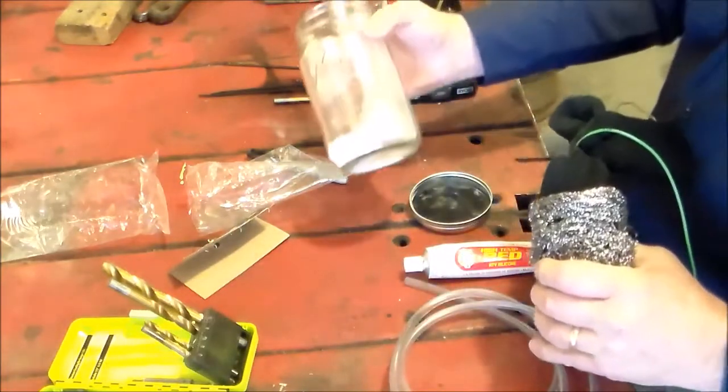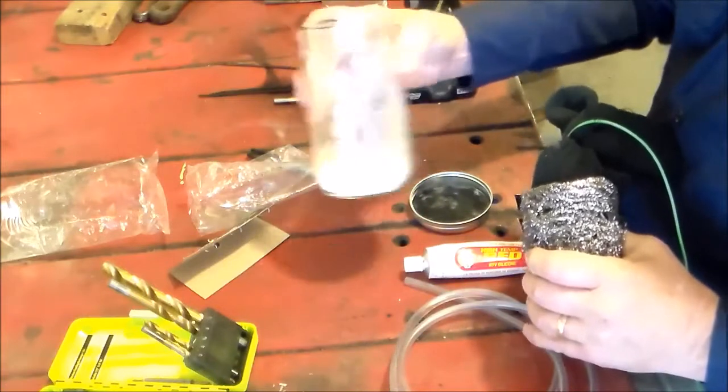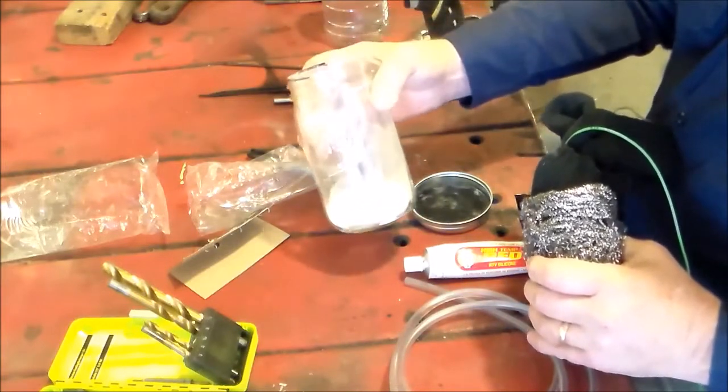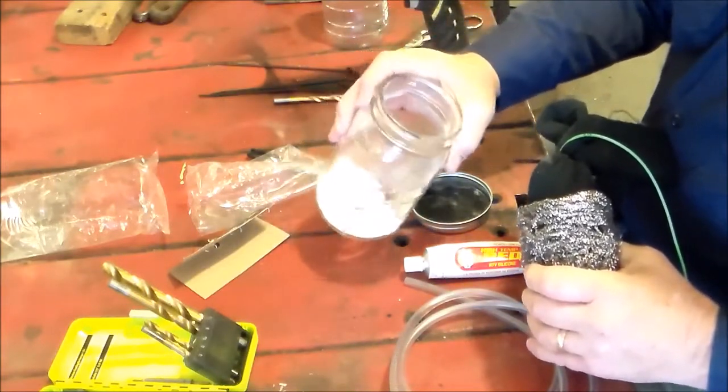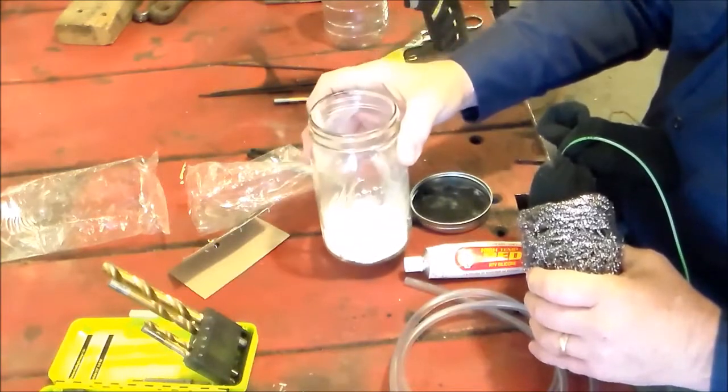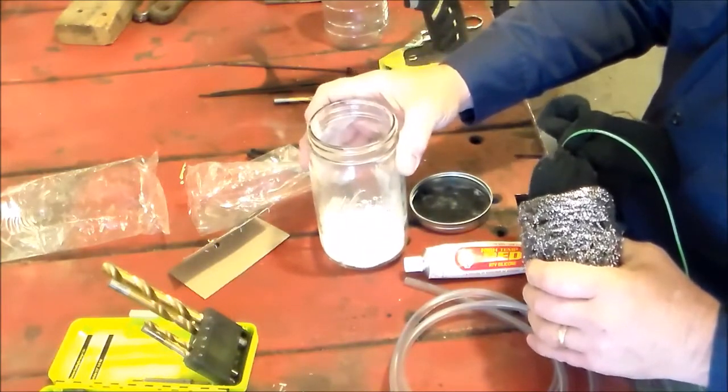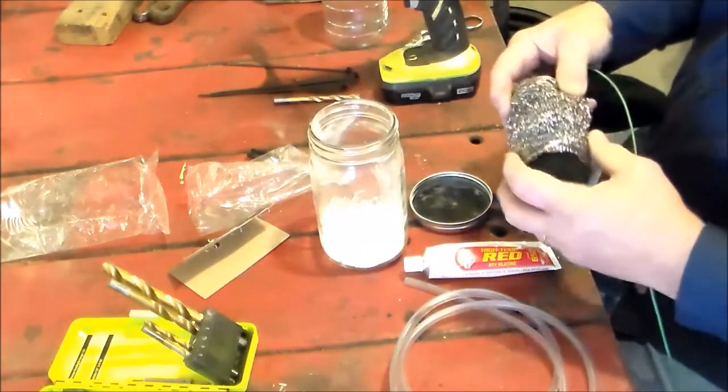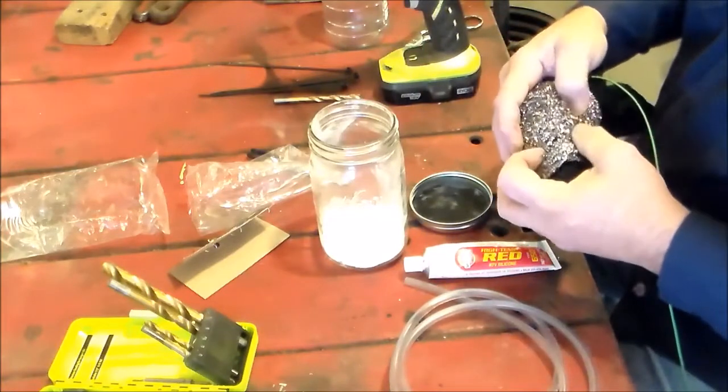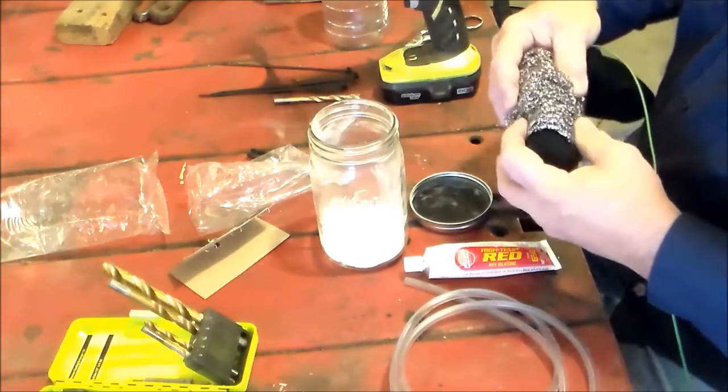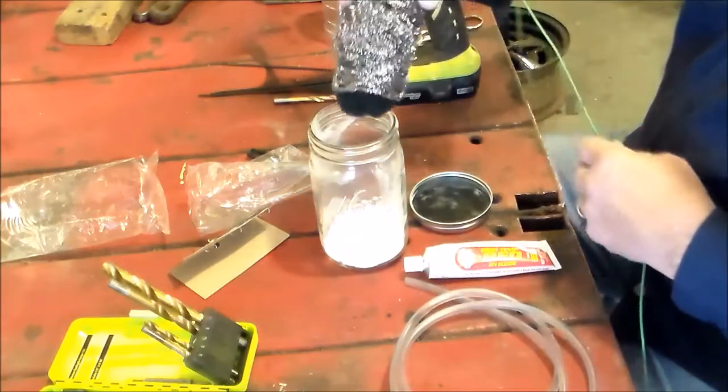Here I've got a mason jar. I put a little bit of baking soda in it and that's supposed to kind of help counteract some of the reaction with the stainless steel and the electricity and the water whenever it's generating hydrogen.